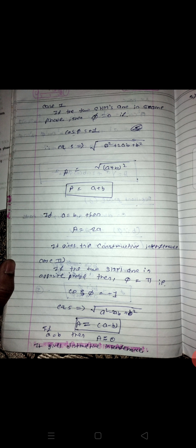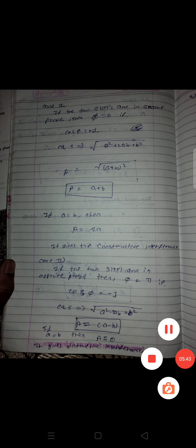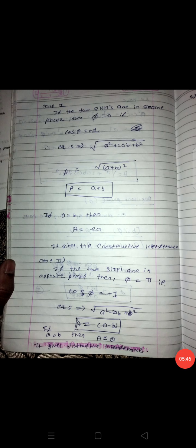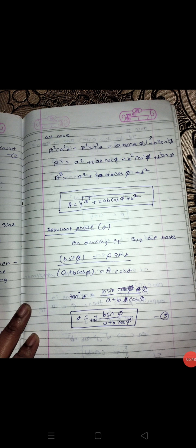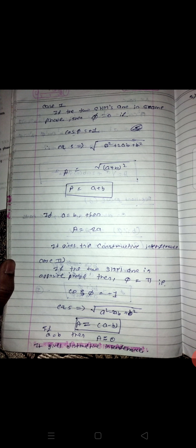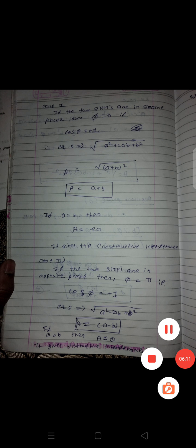So to summarize: constructive interference occurs when resultant is maximum, and destructive interference occurs when resultant is minimum. The resultant phase angle alpha is given by equation 5: tan inverse of (b sinφ) upon (a + b cosφ). We have studied the amplitude equation as well. Case one gives constructive interference and case two gives destructive interference.